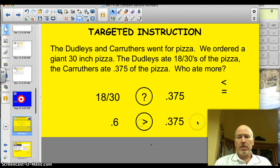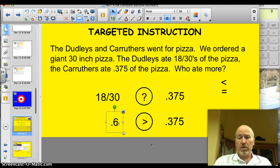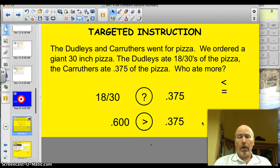0.6 is greater than 0.5. Because remember, 0.6 is really 0.6, 0, 0, however many 0s you want to put on there.